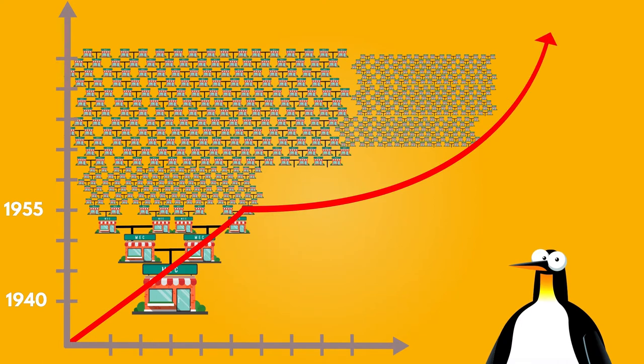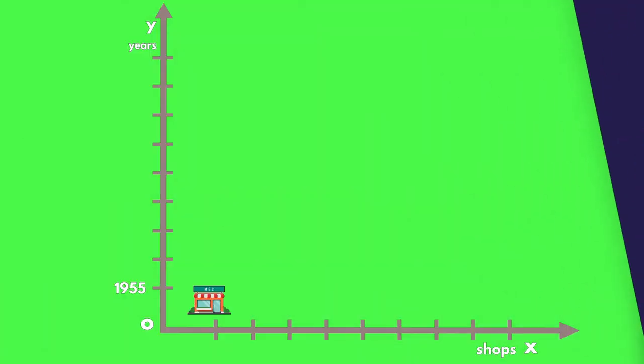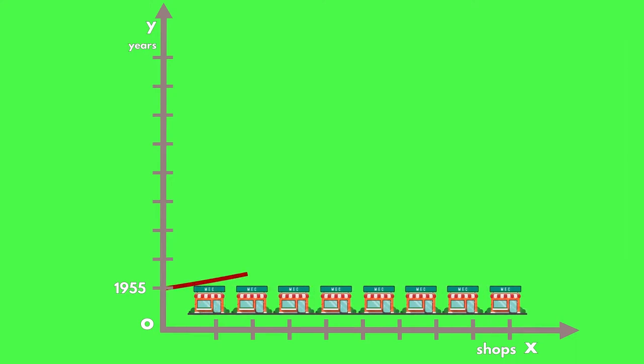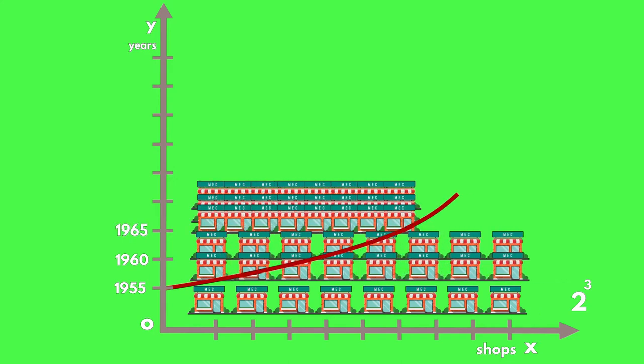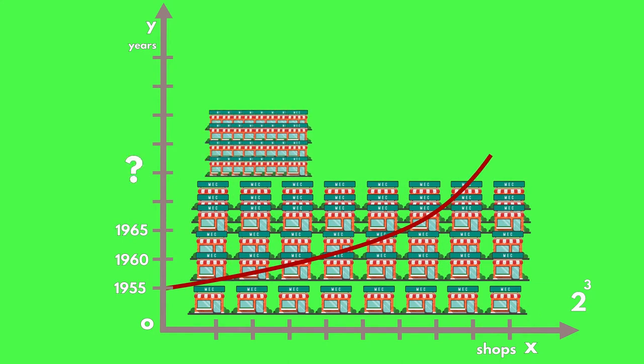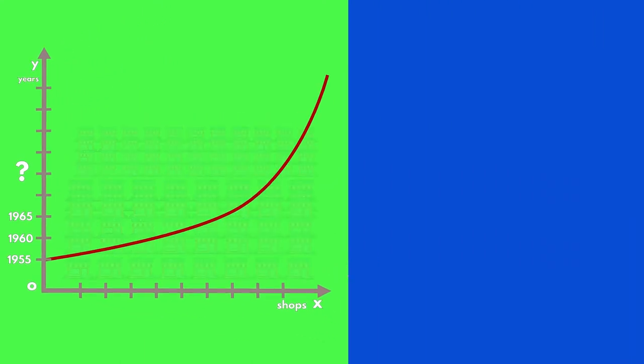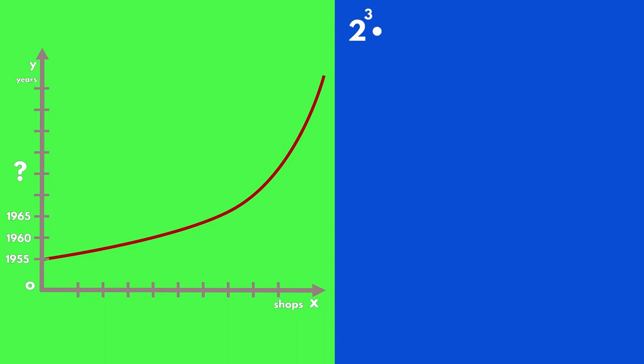But let's return to a, b and x. In 1955, there were 8 stores. This can be written in the form of 2 raised to 3. If we also know that every 5 years the number of shops has doubled, can we find out in what year were 128 stores opened?